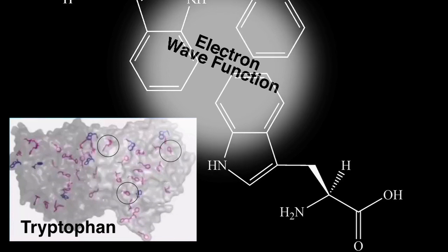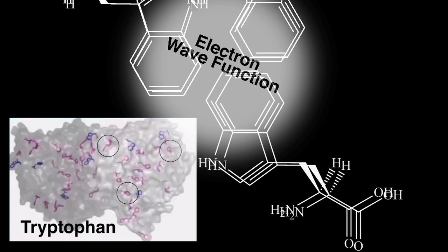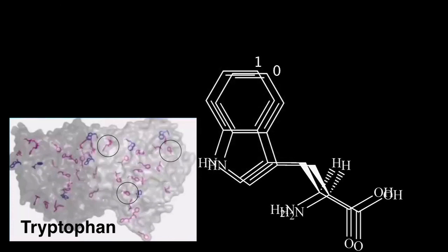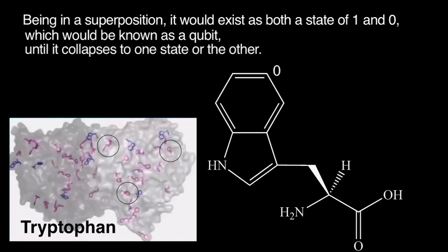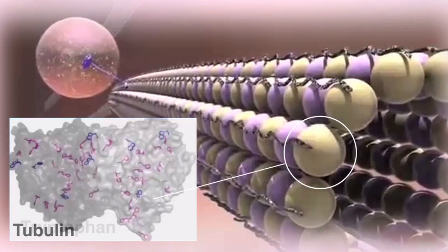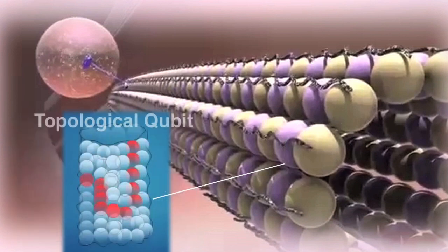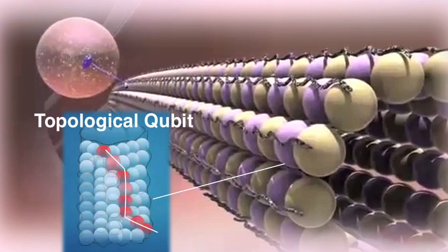Sharing of the electron clouds causes the displacement of the tryptophan into a superposition of two states. Due to the molecular makeup of tubulins, they can exist in a superposition of two states at the same time, represented as a one and a zero. Being in a superposition, it would exist as both states, which would be known as a qubit until it collapses to one state or the other. The sharing along an electron cloud can exist along several different pathways, known as a topological qubit.